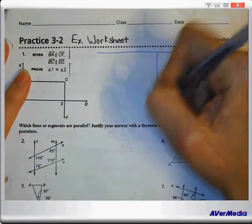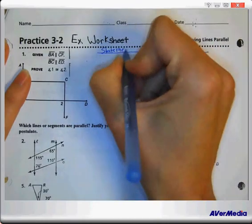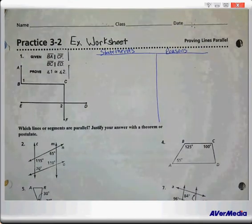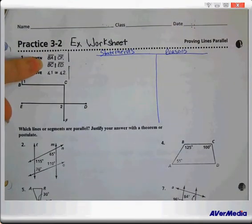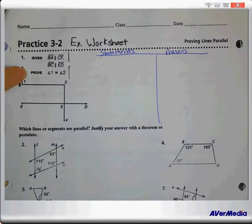We're going to have our statements, which is on the left, which is our work. And we're always going to justify on the reasons. A few things you need to remember: our given is always the starting place. So our given and our diagram help us out, and the proof is where we always want to end up.